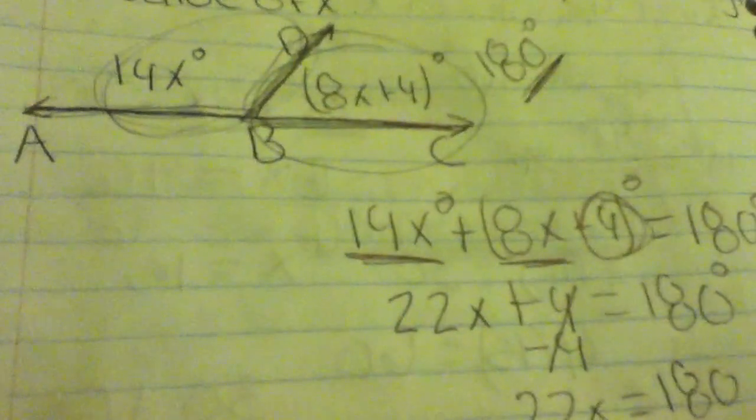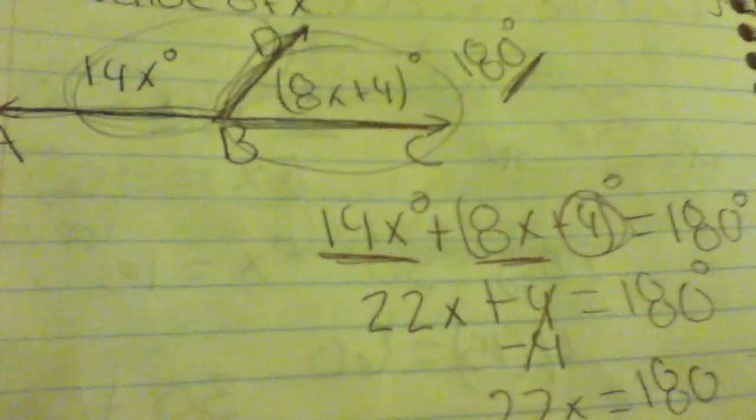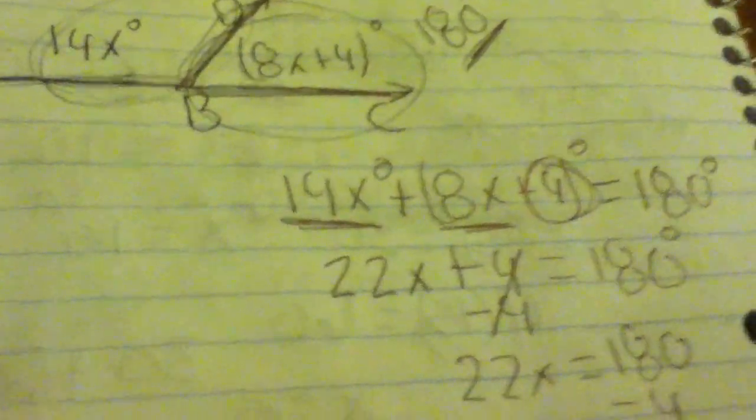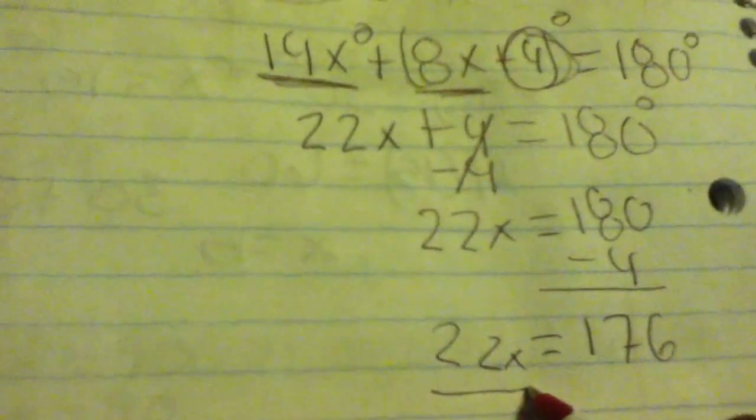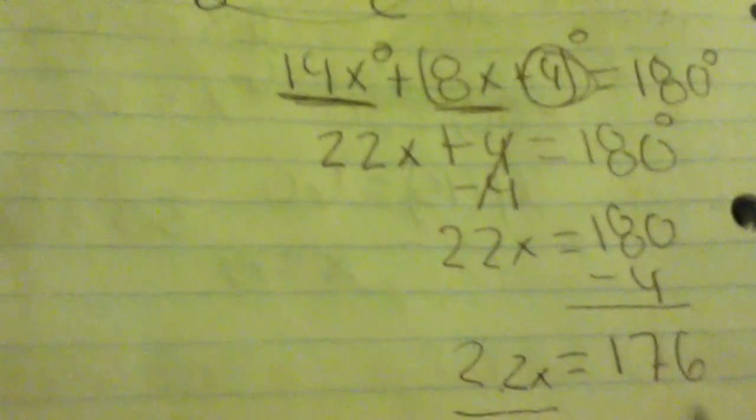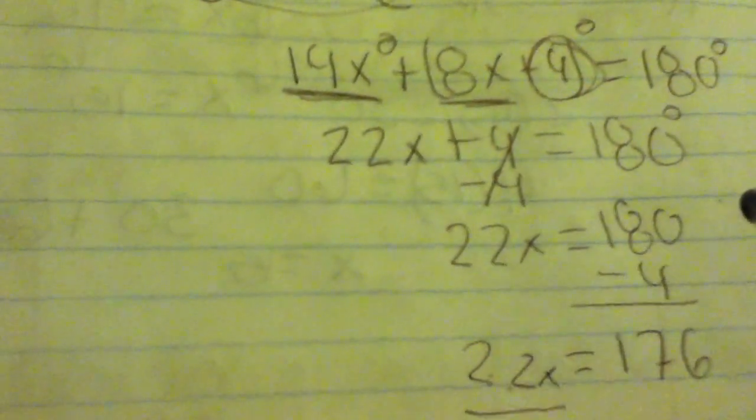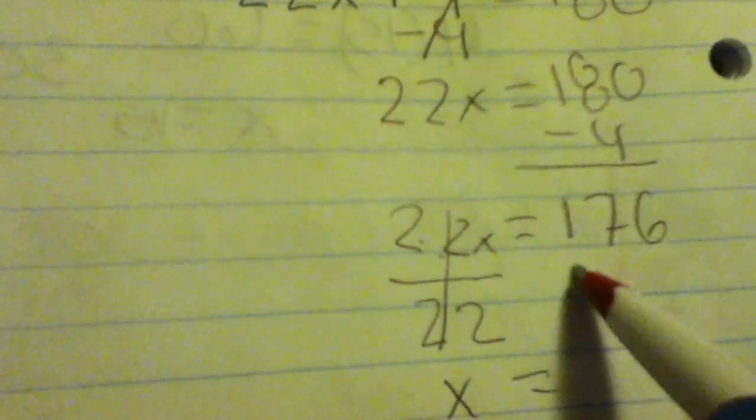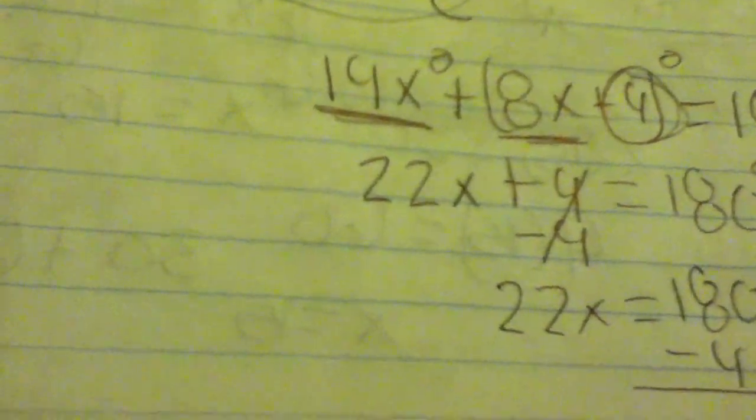Subtract 4 from 180 and get 176. Bring your 22x down. To get x by itself, because you're multiplying, you do the opposite and divide by 22. When you do to one side you must do to the other side, so you divide 176 by 22. 22 goes into 176 eight times, so x equals 8.